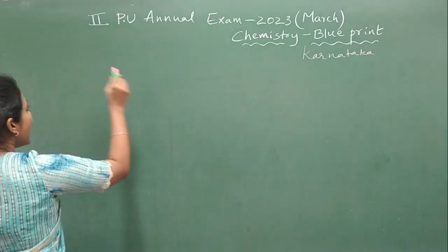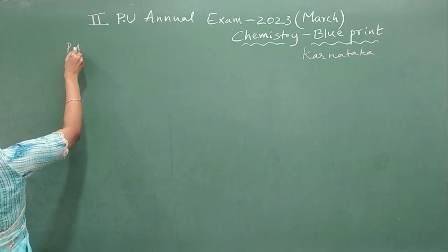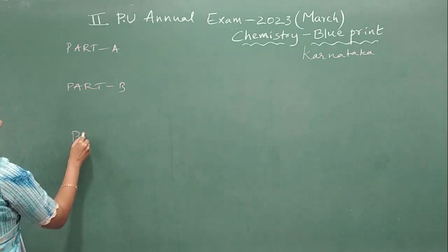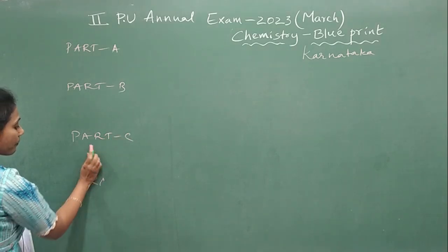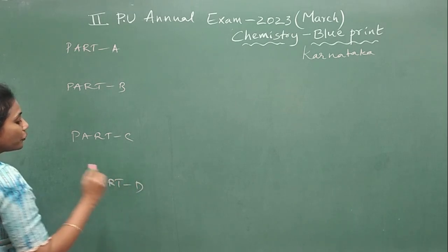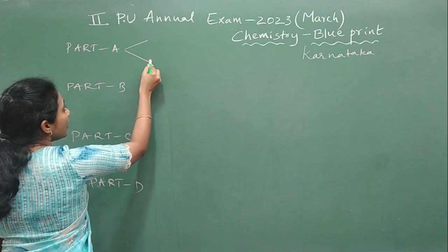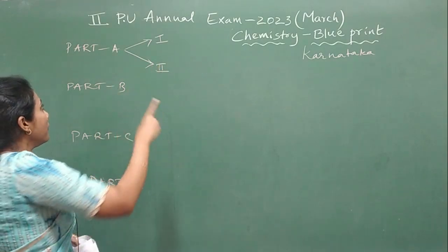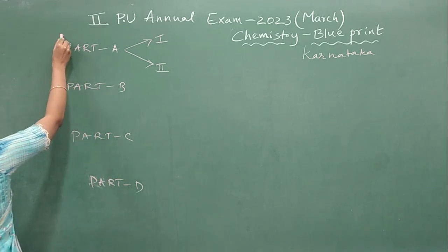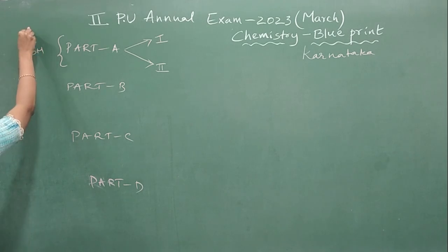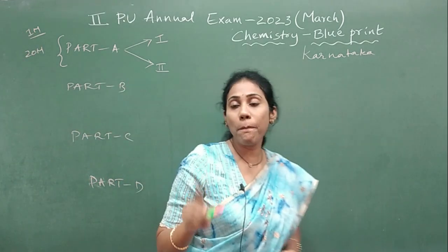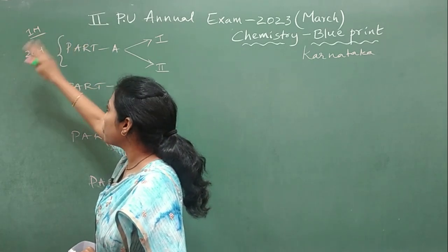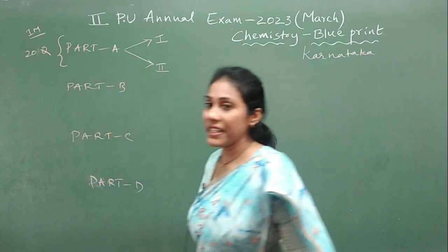So let me first tell you how the question paper is going to be. Altogether the question paper has got four parts: Part A, Part B, Part C, and Part D. Part A has got two main headings — first main and second main. Part A is of 20 marks, with 20 one-mark questions. So part A carries all one-mark questions — 20 questions, each carrying one mark.